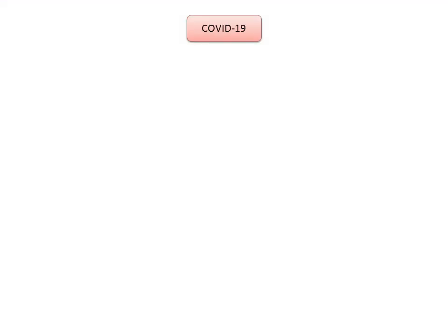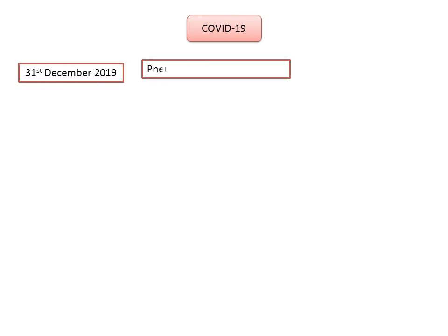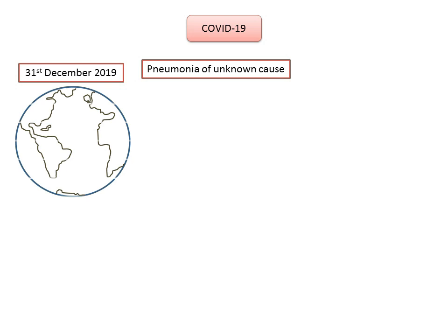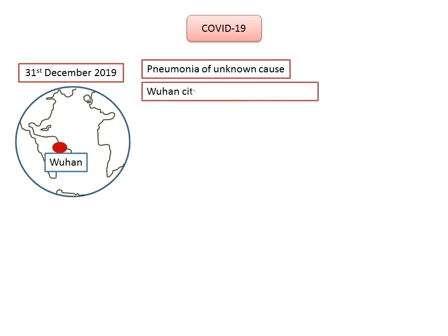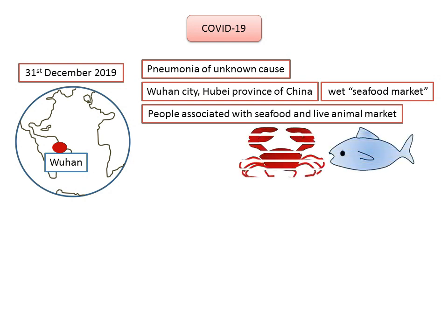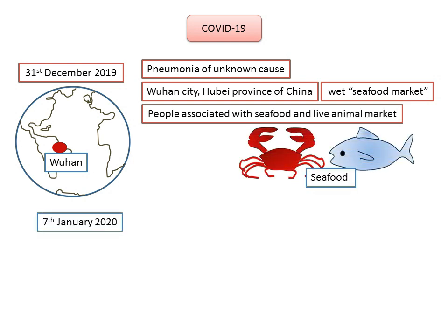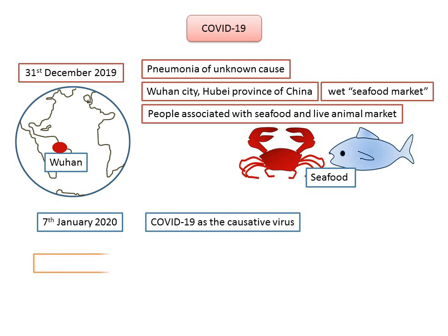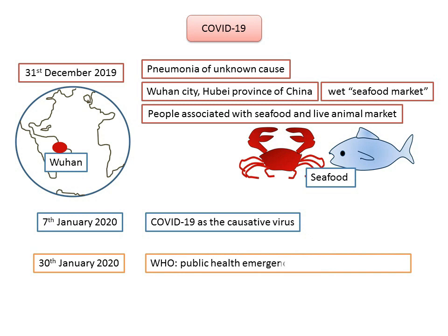First, let's take a look at the statistics related to COVID-19. On December 31st, 2019, the WHO China Office was informed of pneumonia of unknown cause in Wuhan City, Hubei Province of China. The initial cases were found in people associated with a seafood and live animal market in Wuhan. On 7th of January 2020, COVID-19 was isolated and identified as the causative virus. On January 30th, 2020, WHO, that is the World Health Organization, declared it a public health emergency of international concern.